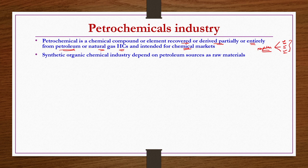Synthetic organic chemical industries depend on petroleum resources as raw materials. There are a huge number of resources from crude petroleum for producing a large number of synthetic organic chemicals — which we will discuss over the next two to three chapters covering production of different types of petrochemicals from petroleum resources.